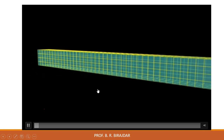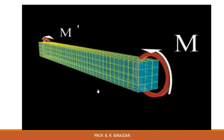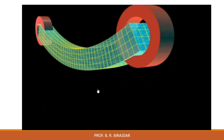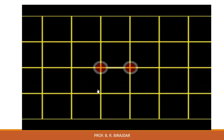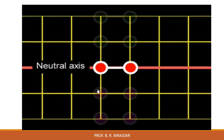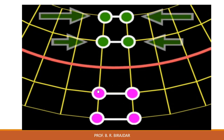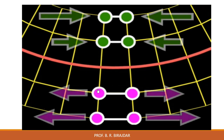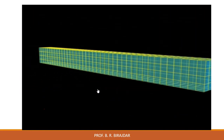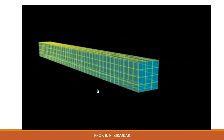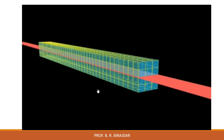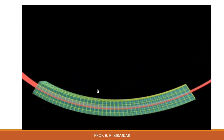Consider a prismatic beam when equal and opposite moments M and M' are applied — the ends of the beam bend upwards. Fibers at a certain position called the neutral axis do not change in length, while fibers above it shorten and fibers below it elongate. For linearly elastic beams, this neutral axis passes through the centroid of the cross section. When the beam is bent, it forms an arc of radius ρ.